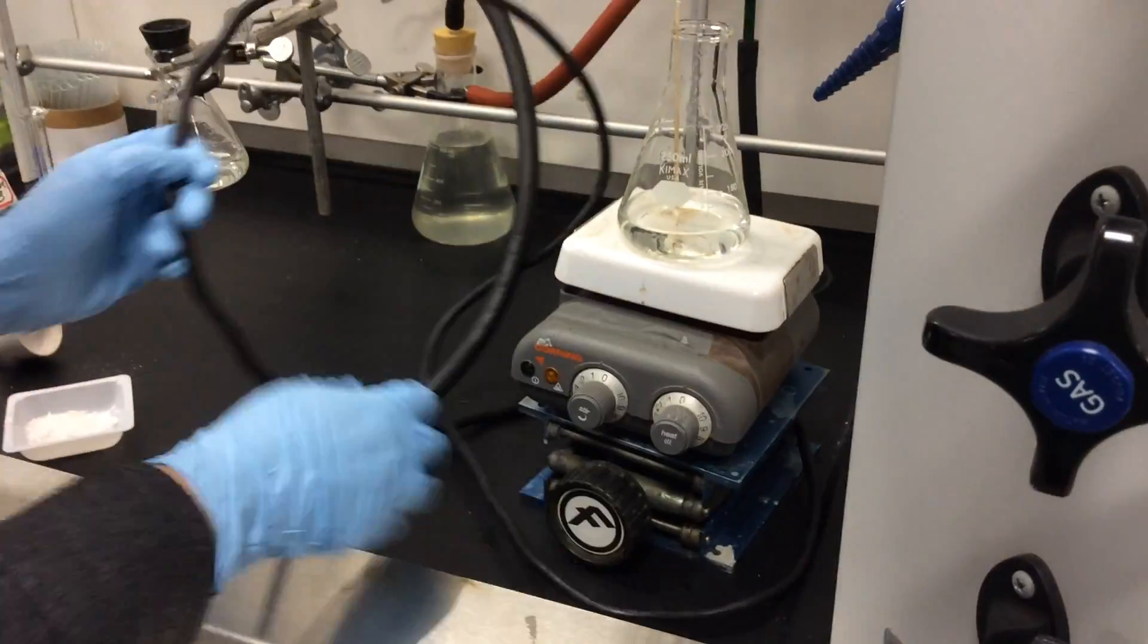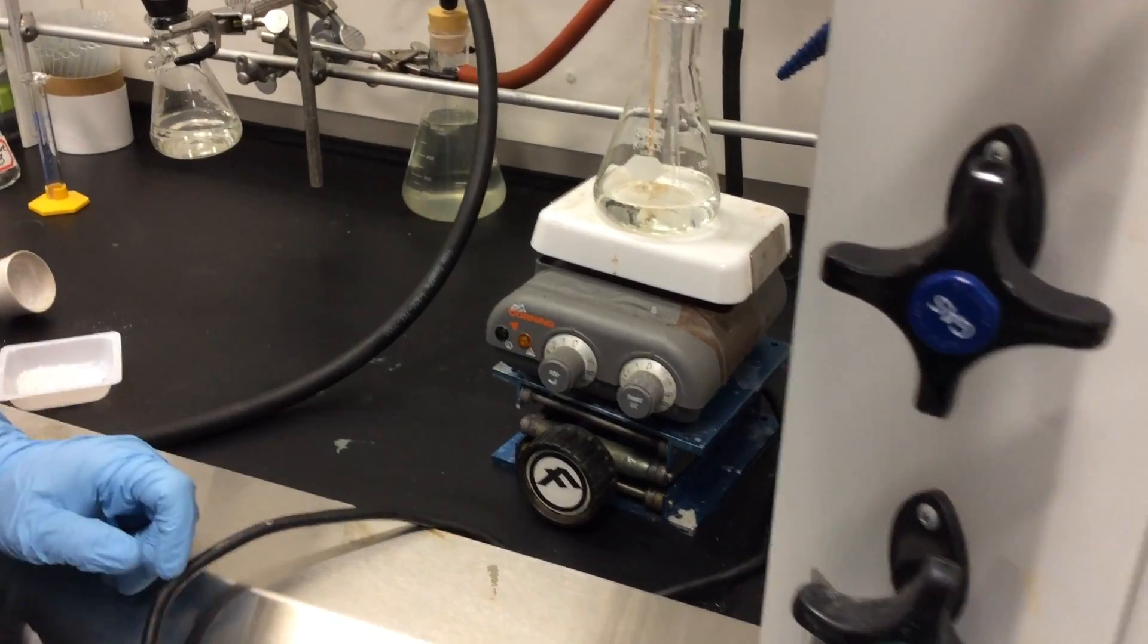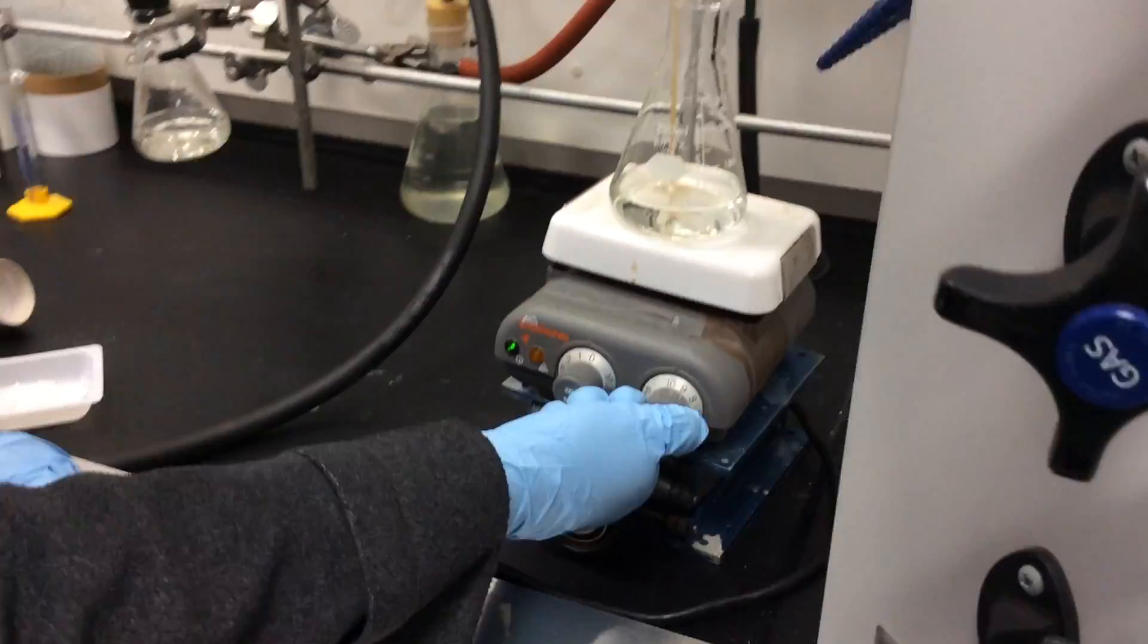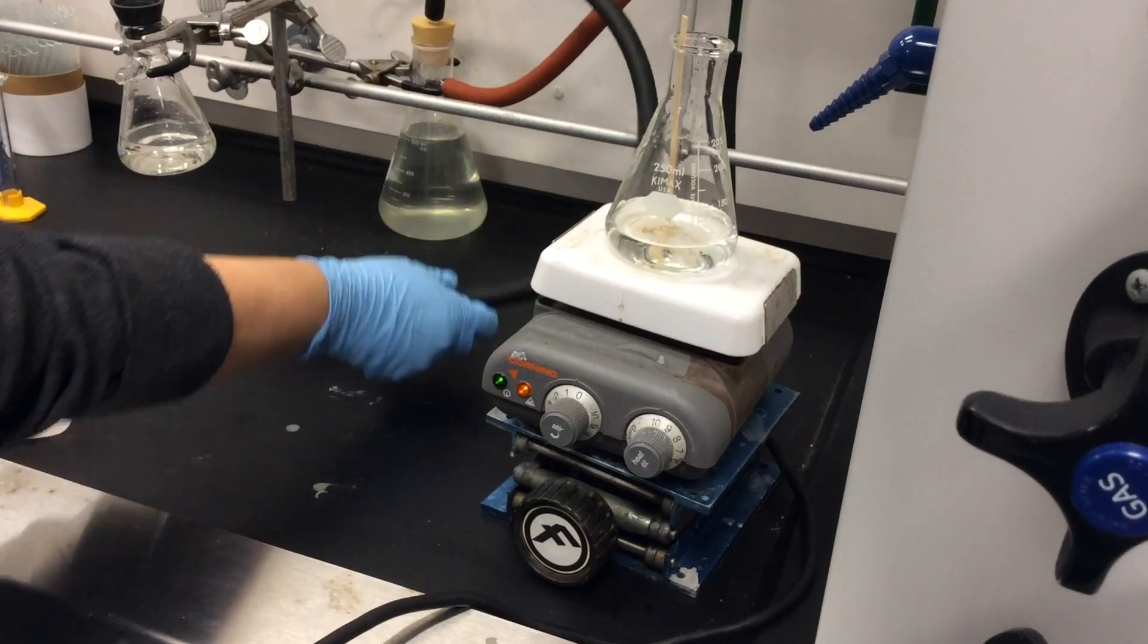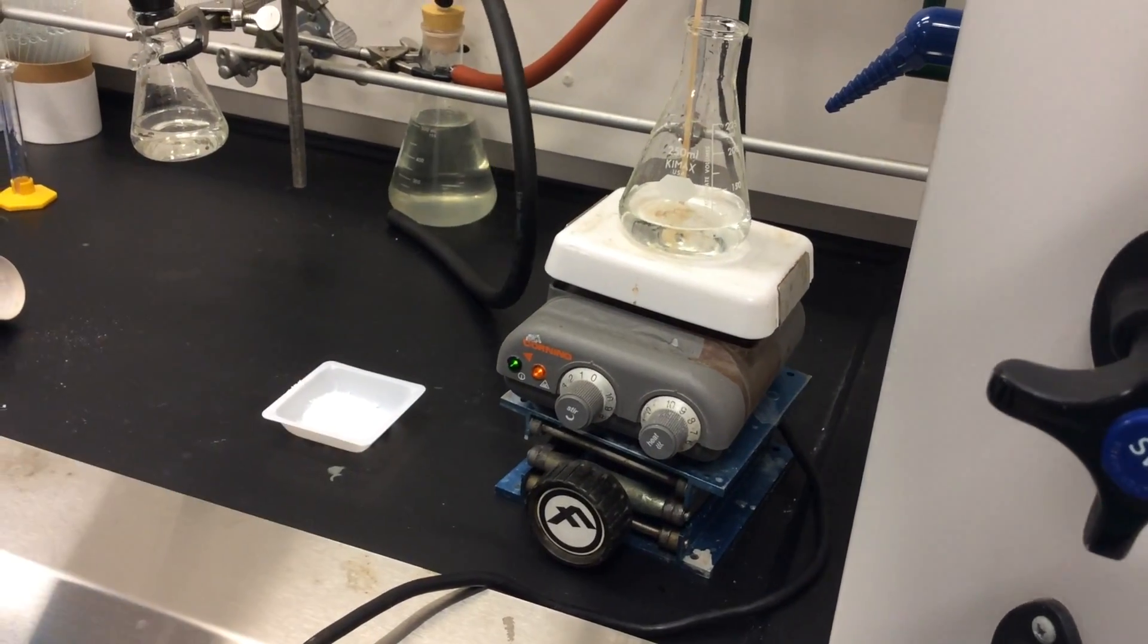We're going to put it on the hot plate. Don't forget to plug the hot plate in, otherwise it won't heat. Turn it to high. And we're going to just let that heat to boiling. While we let that come to boil, we can now take our dirty glassware to the sink to wash.